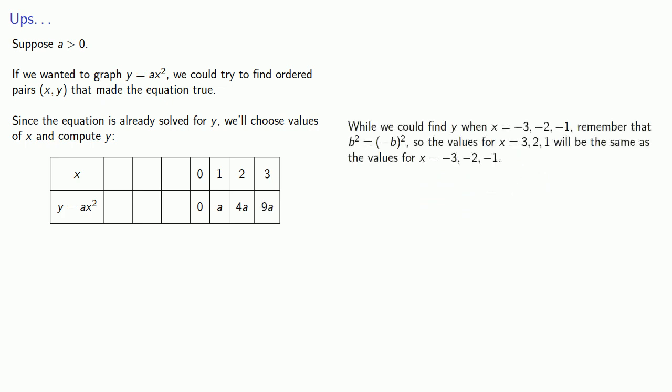While we could find y when x equals minus three, minus two, minus one, remember that b squared is the same as minus b squared. So the values for x equals three, two, and one will be the same as the values for x equals minus three, minus two, and minus one.